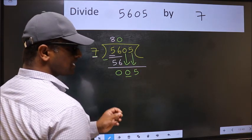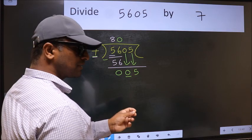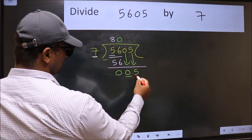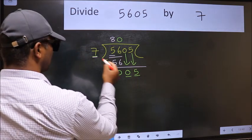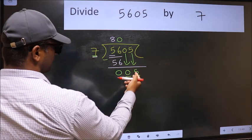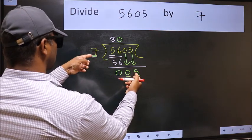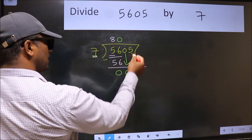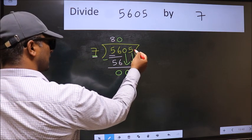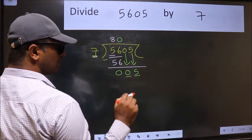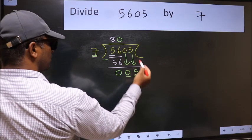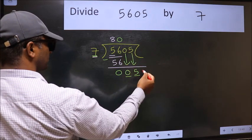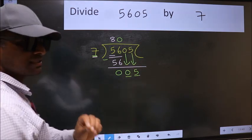After this step, the mistake happens. And the mistake is this: here we have 5 and here 7. 5 is smaller than 7, and we don't have any more numbers to bring it down. So what many do is they directly put dot, take 0. Which is wrong.